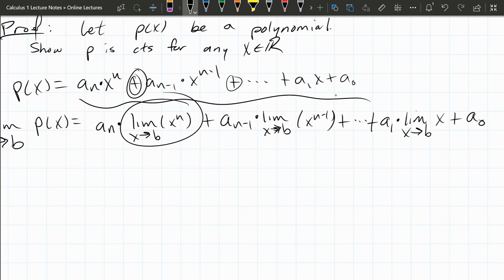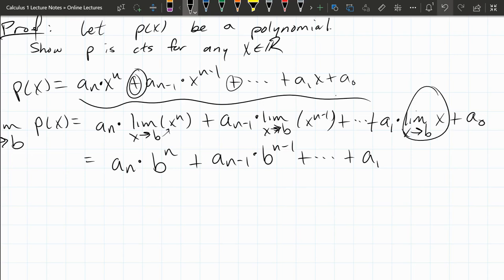From here we have our limit rules, which say that the limit of x to the n power is just—you can just plug this value in here—b^n. Now we'll do the exact same thing here: a_n times b^n plus a_{n-1} times b^{n-1}, plus dot dot dot, plus a_1 times b, plus a_0.